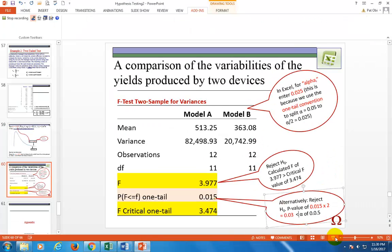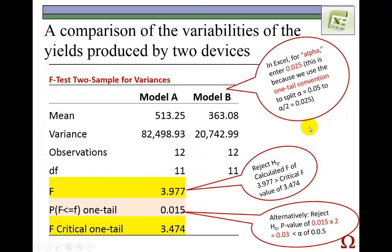Well, I hope you enjoyed this presentation on testing for the equality of two population variances. This is Pat Obey, professor at Purdue University Northwest.